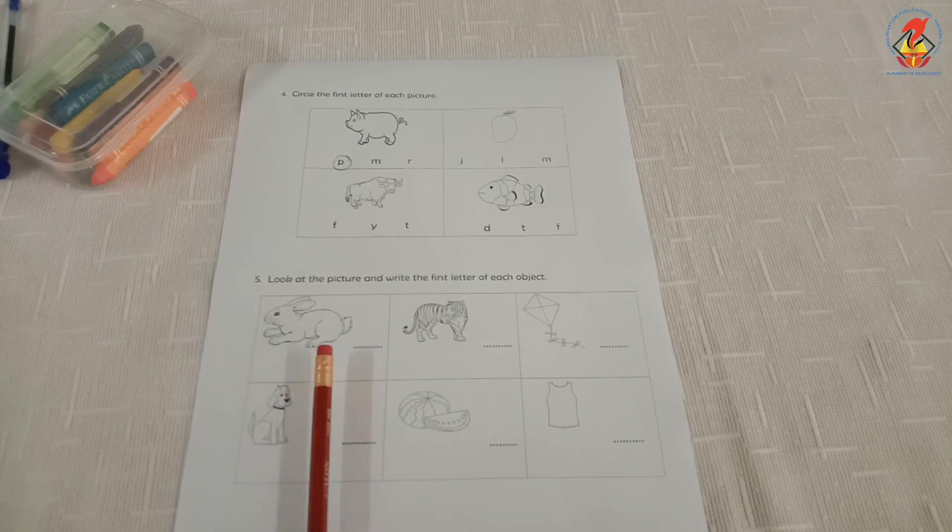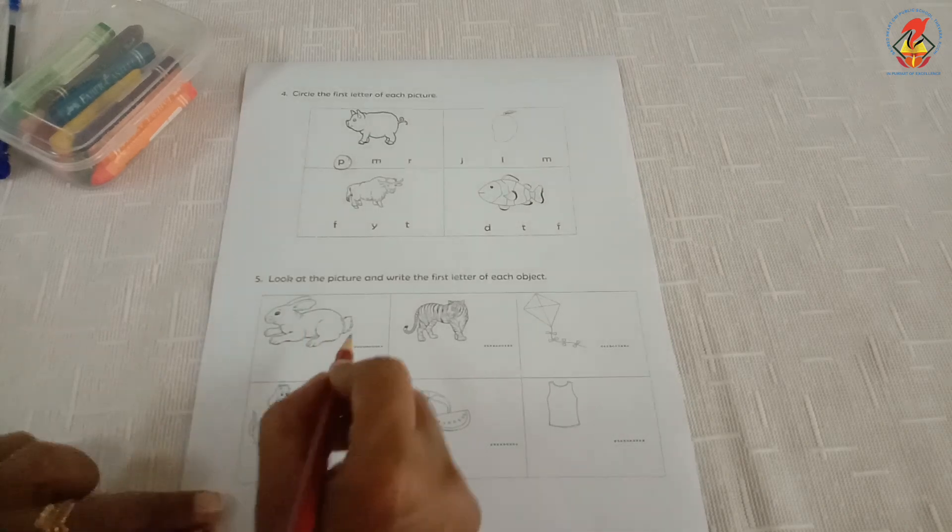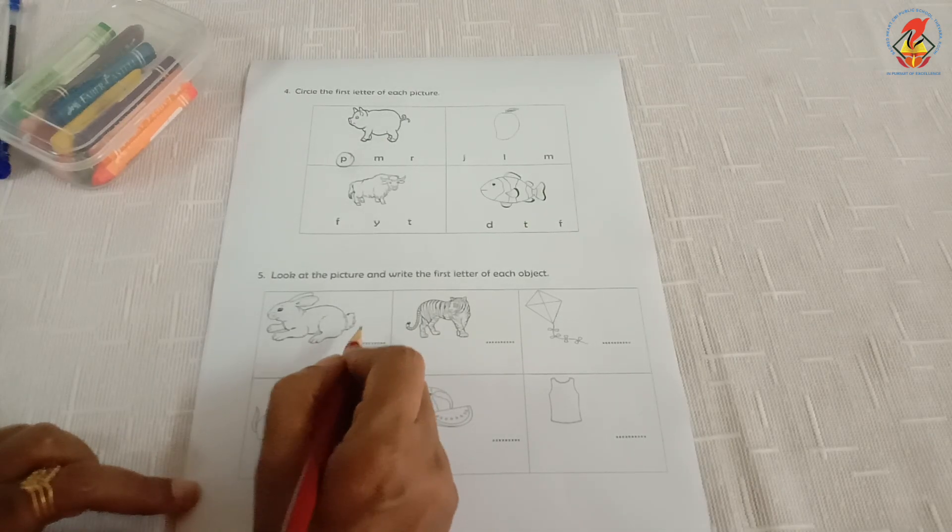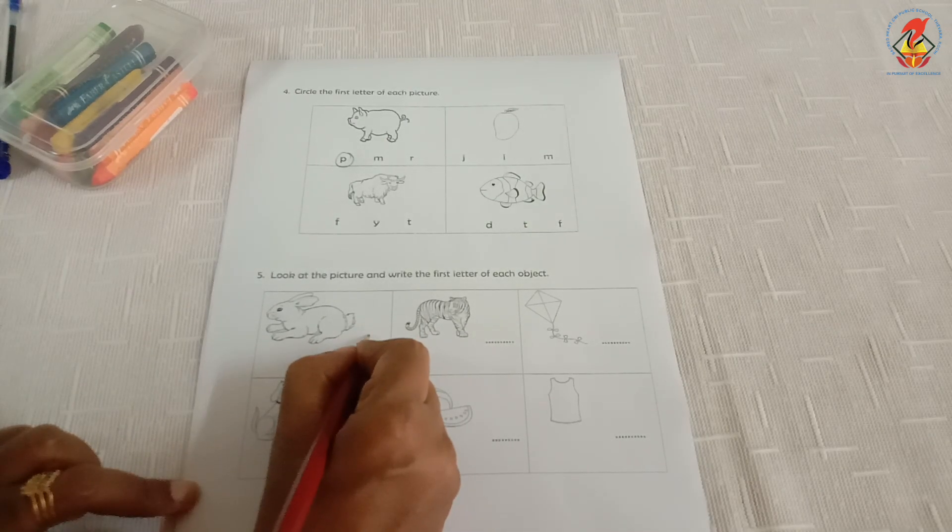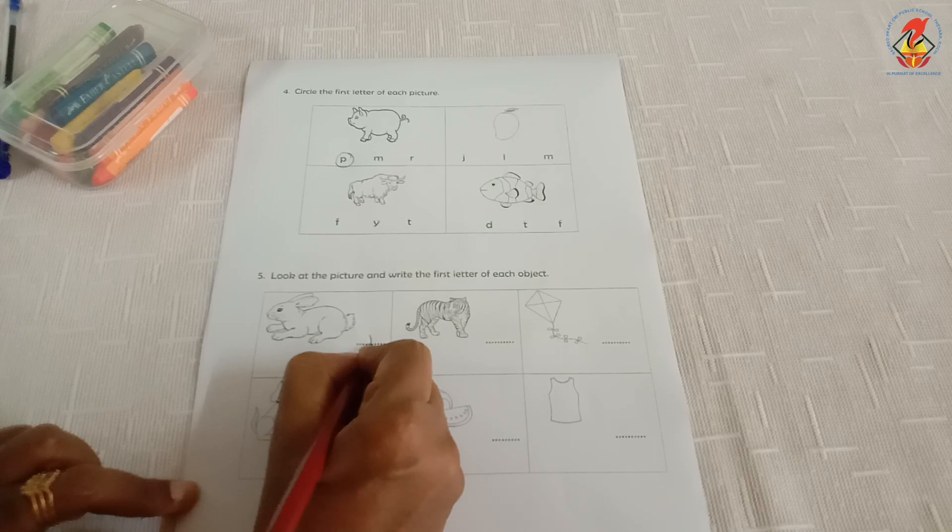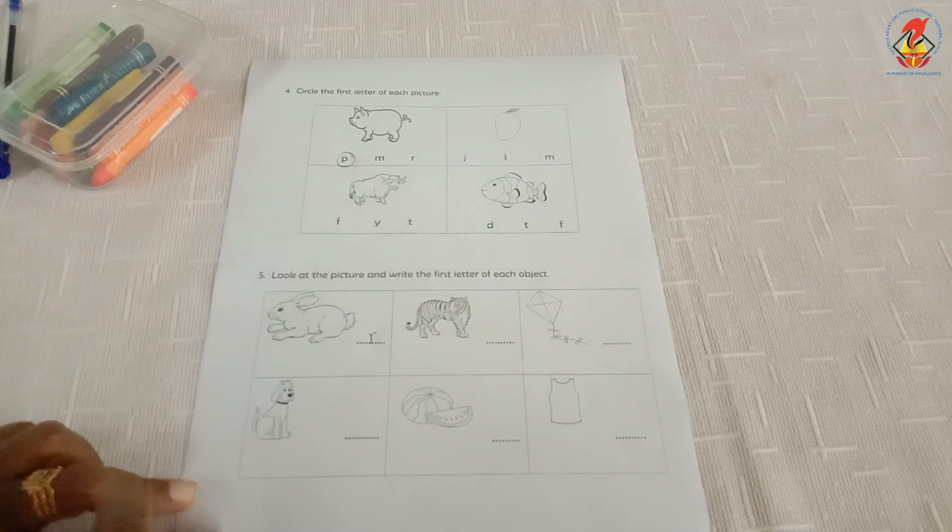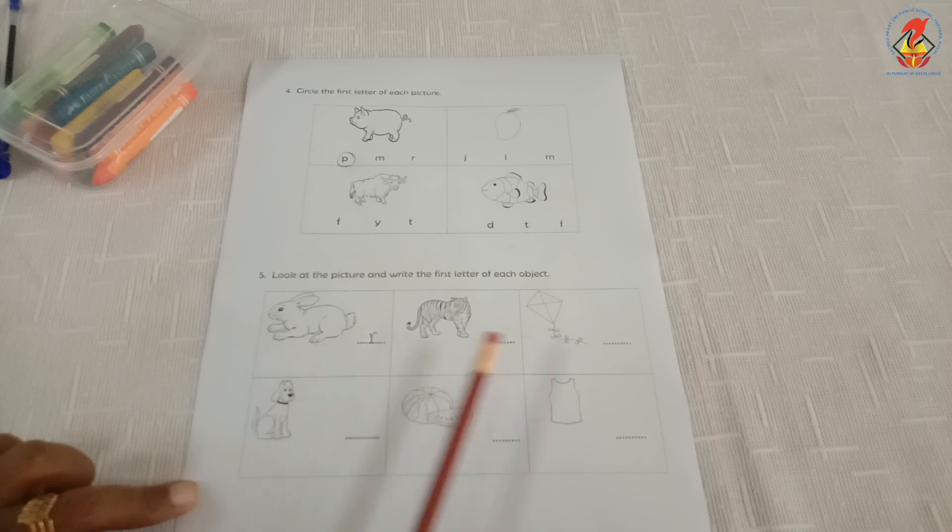So, letter R for this picture. You have to write here small letter R. This is small letter R. Continue to do the rest in the same manner.